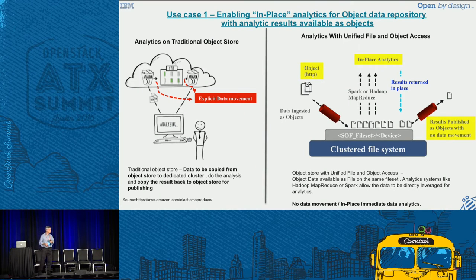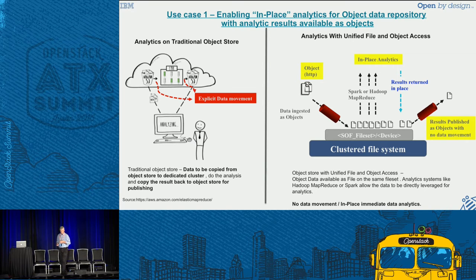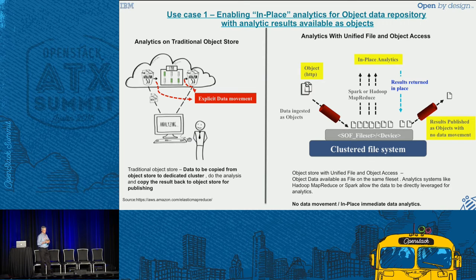Let's talk about some of those use cases. First is in-place analytics. On the left-hand side of the diagram, we've got a traditional object store environment. Data is ingested as objects and then I want to run analytics on that. The way that would work in traditional systems is my analytics software would have to extract the data from the object store using the object interface — so that would be a copy of the data. It moves that copy to its work area, does its processing, and then puts the results back into the object store. So a lot of data movement.